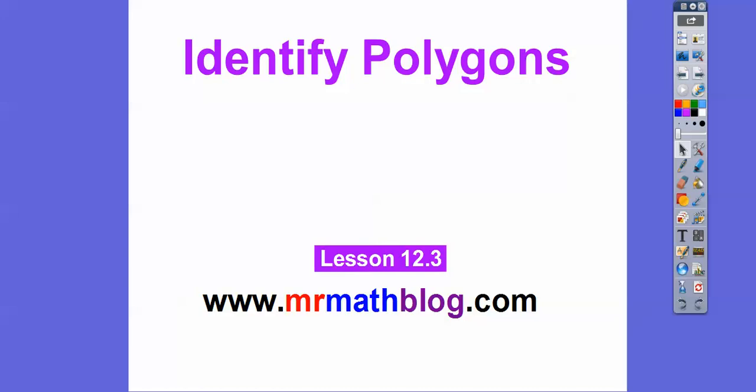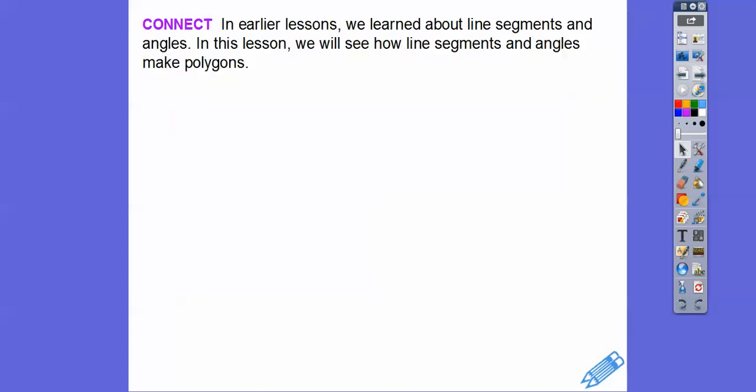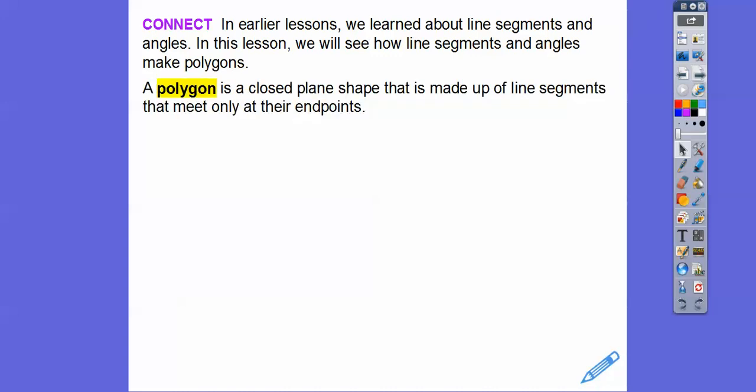Hey, everybody. This lesson is identifying polygons. Polygons are closed-shaped figures made up of line segments. There are all kinds of polygons, and we'll talk about some of them in this lesson. Our question is: how can we use line segments and angles to make up polygons? In earlier lessons we talked about line segments and angles, and in this lesson we're going to see how they both make up polygons.